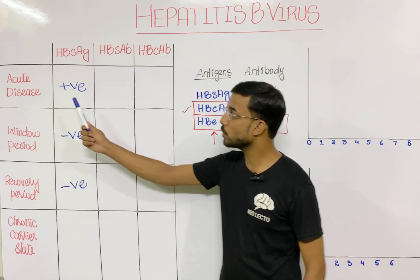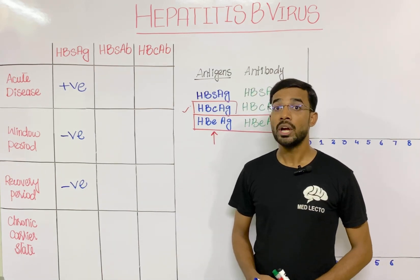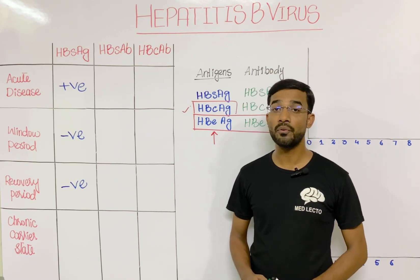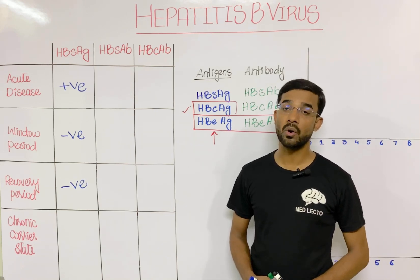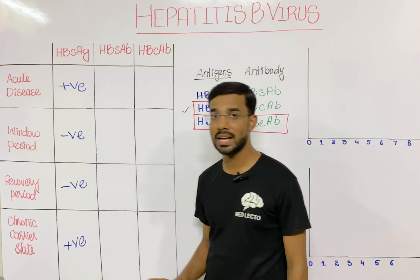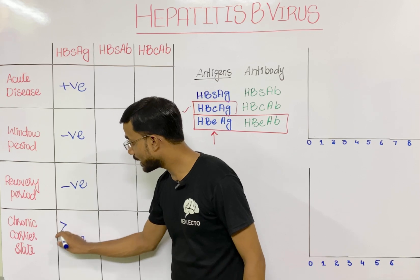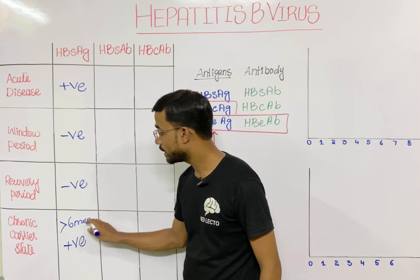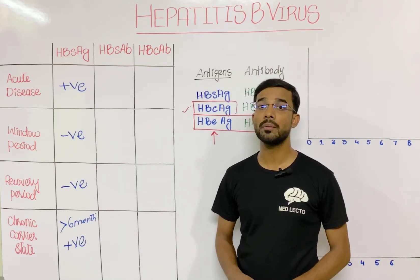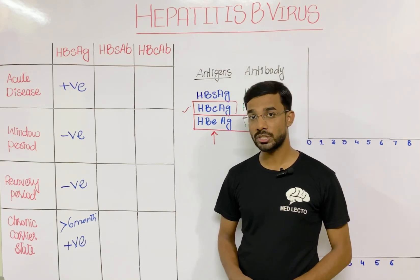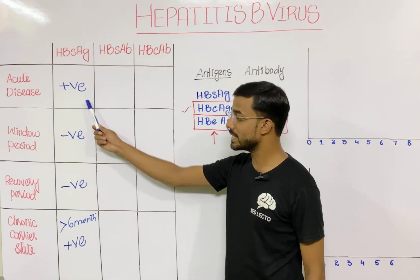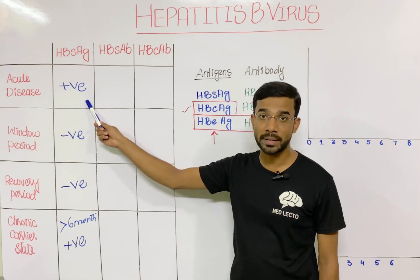In the chronic carrier state, if the surface antigen is continuously present in the serum for six months or greater, it moves towards the chronic carrier state. So in chronic disease, surface antigen will also be positive. This is the important distinction: the virus is always present in the body of a chronic carrier.